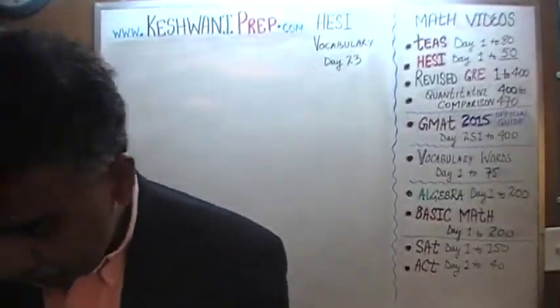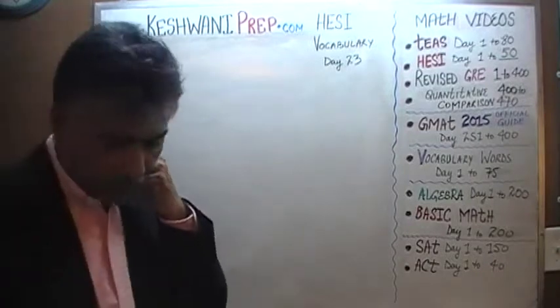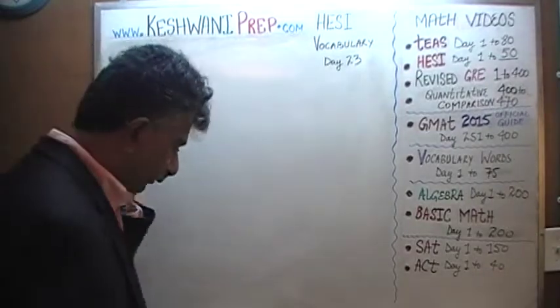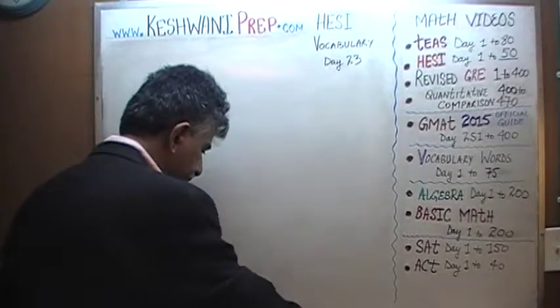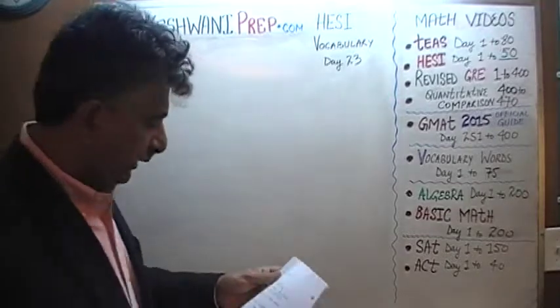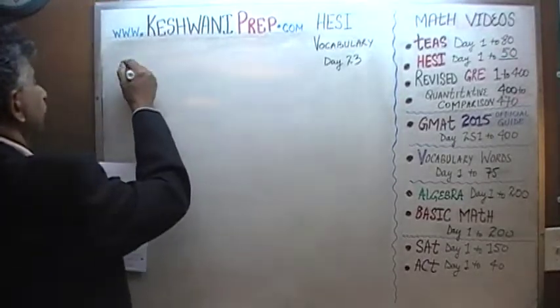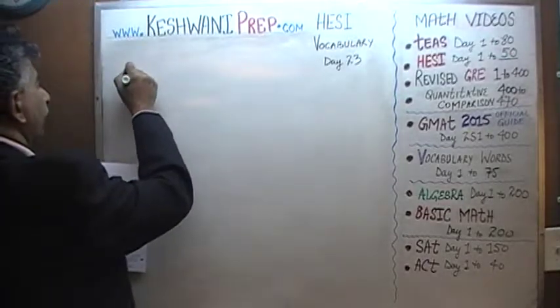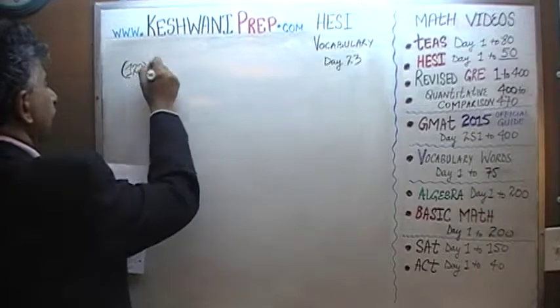Today is our vocabulary lesson number twenty-three. Let's pick up from where we left off on day number twenty-two. The very first word we have today is number one-twenty-two.